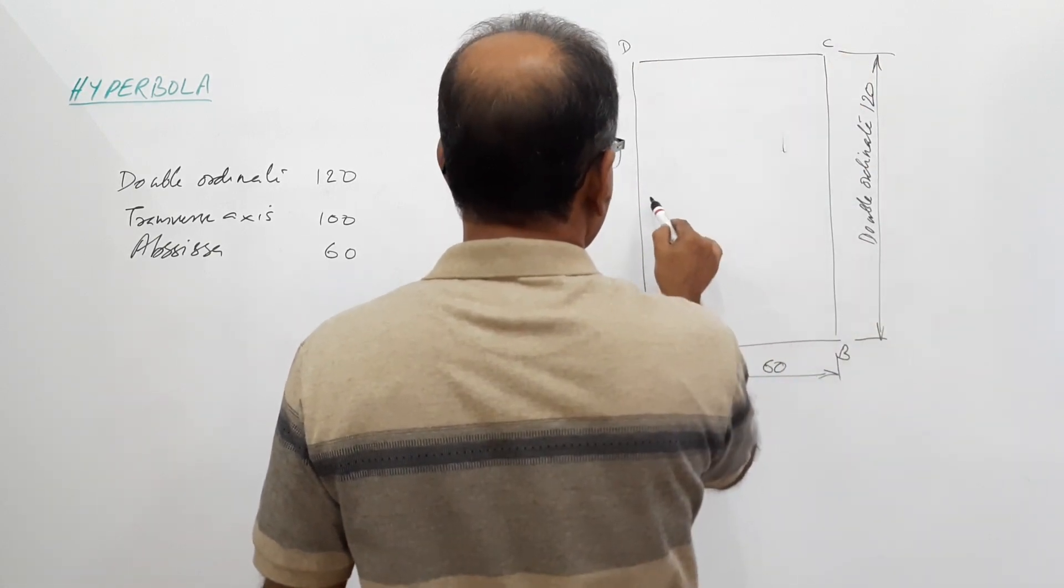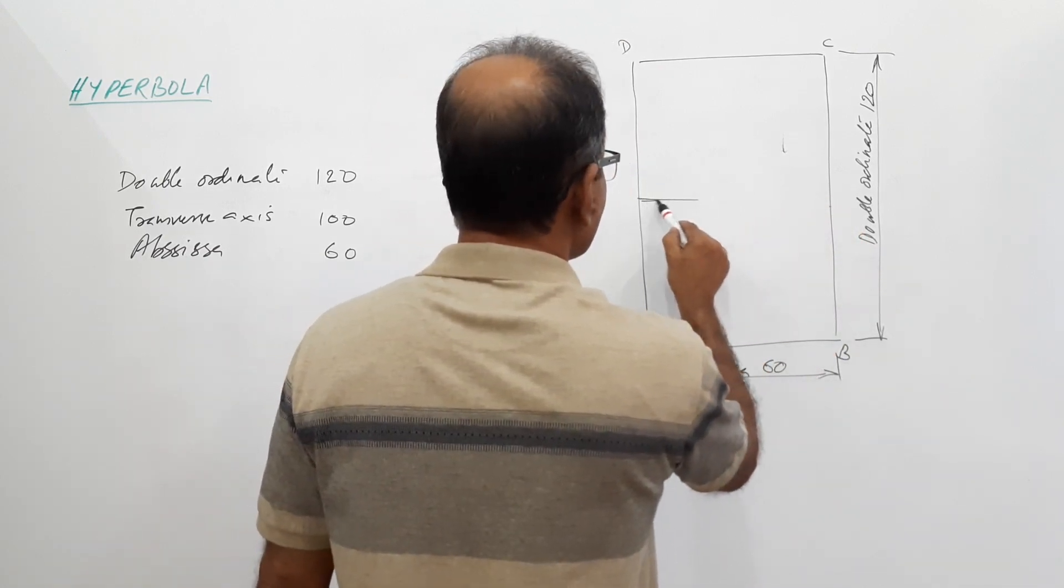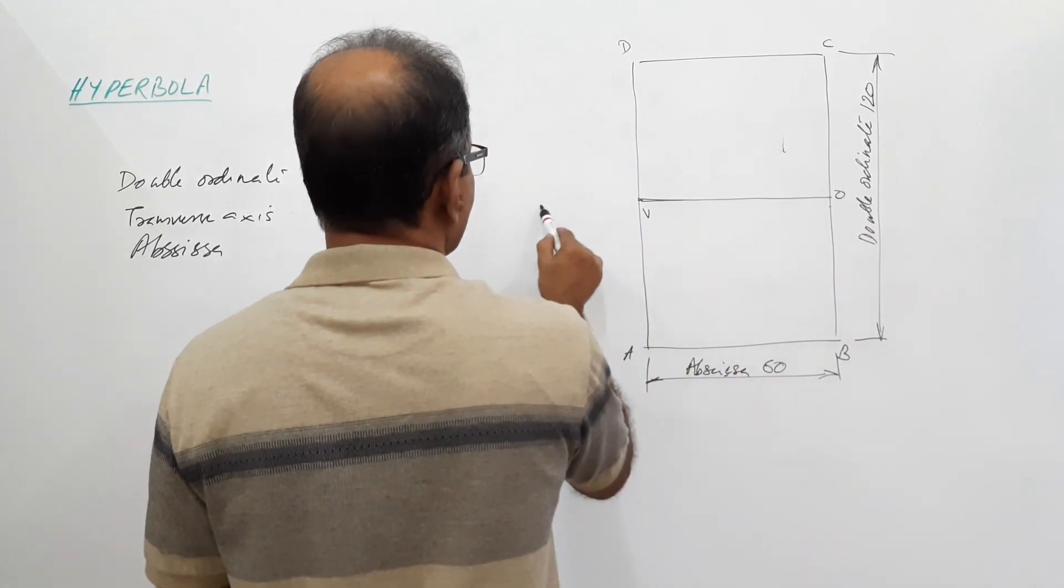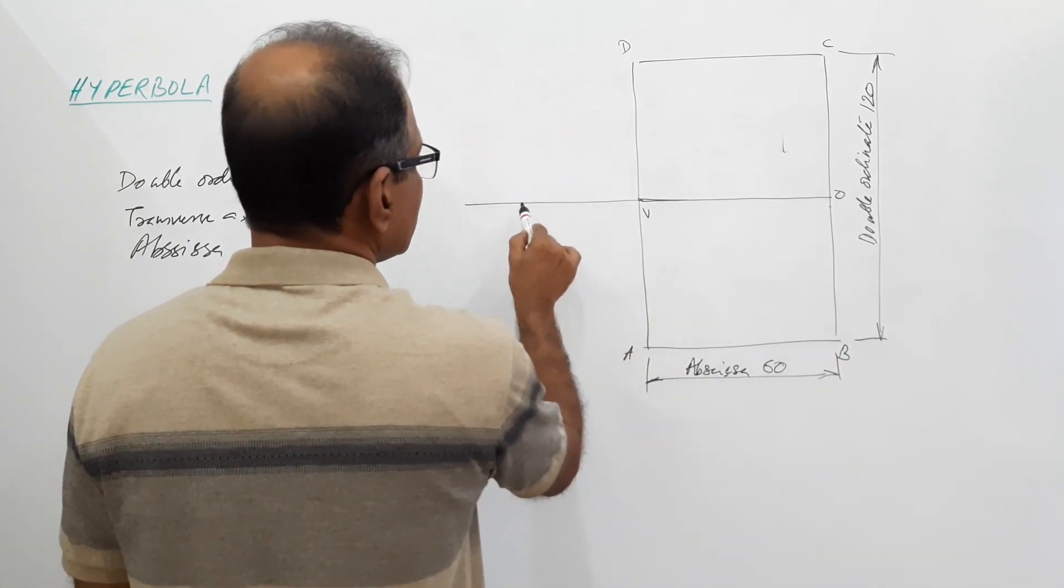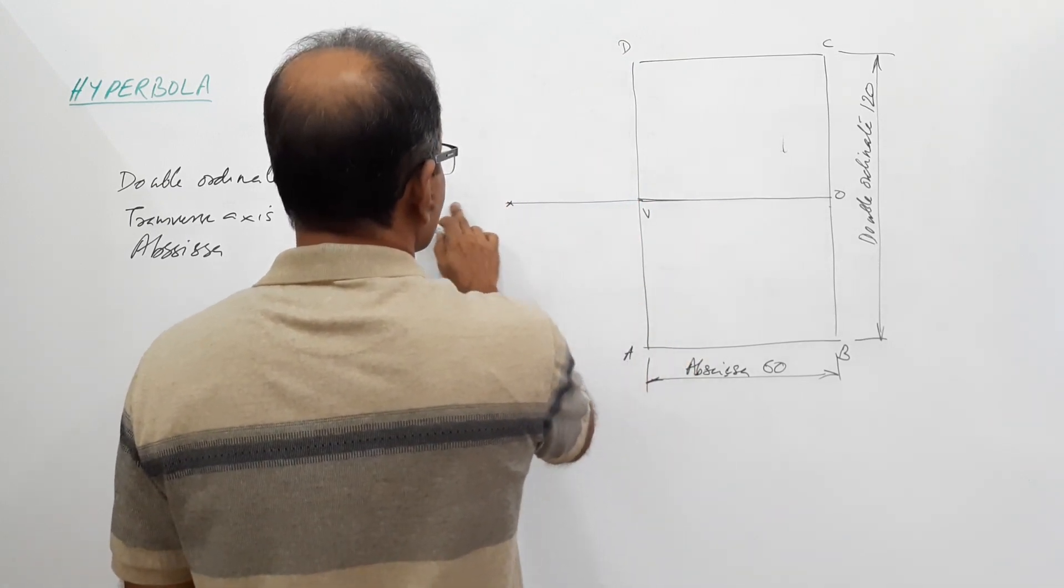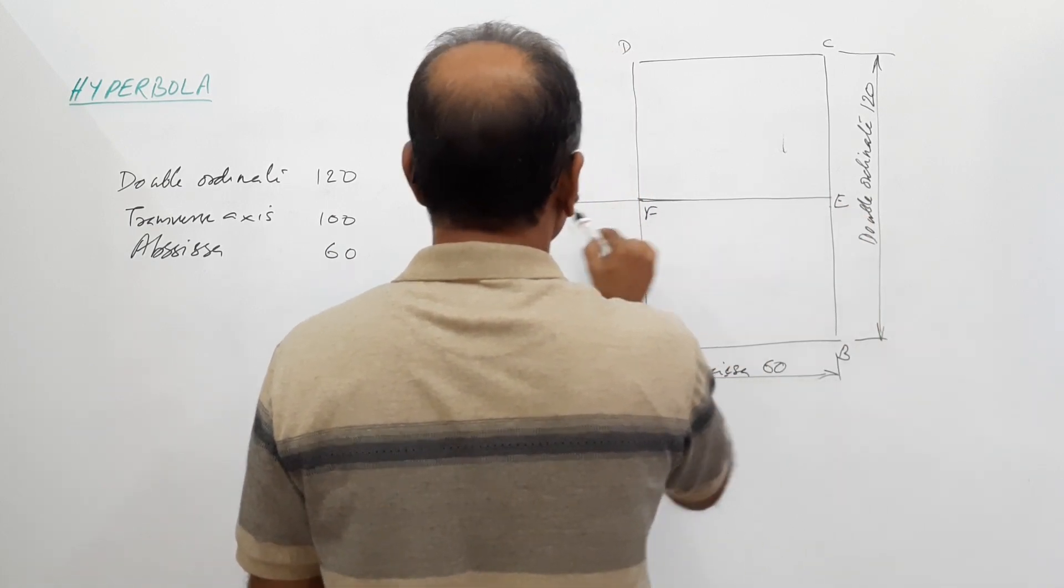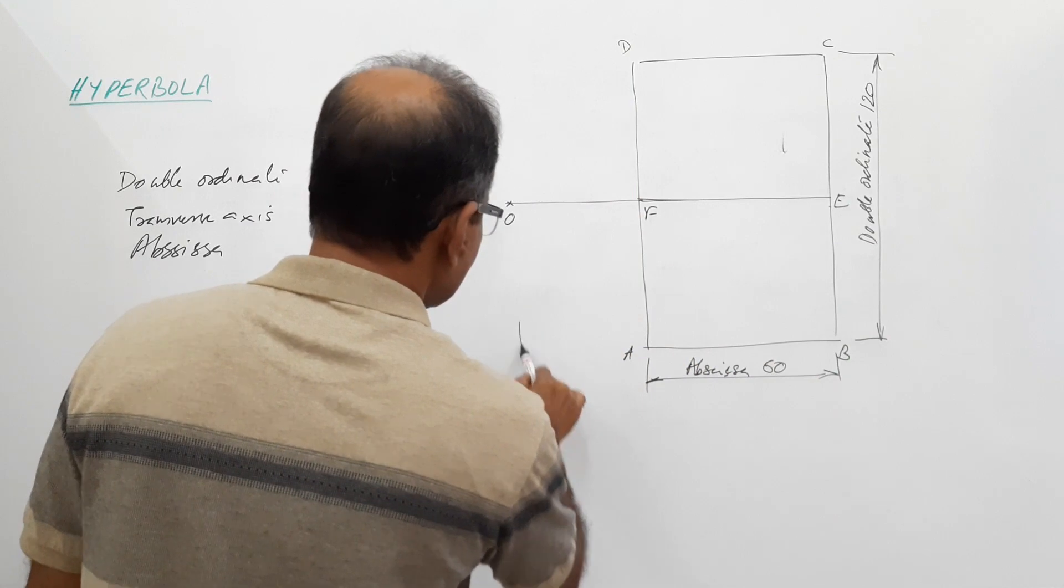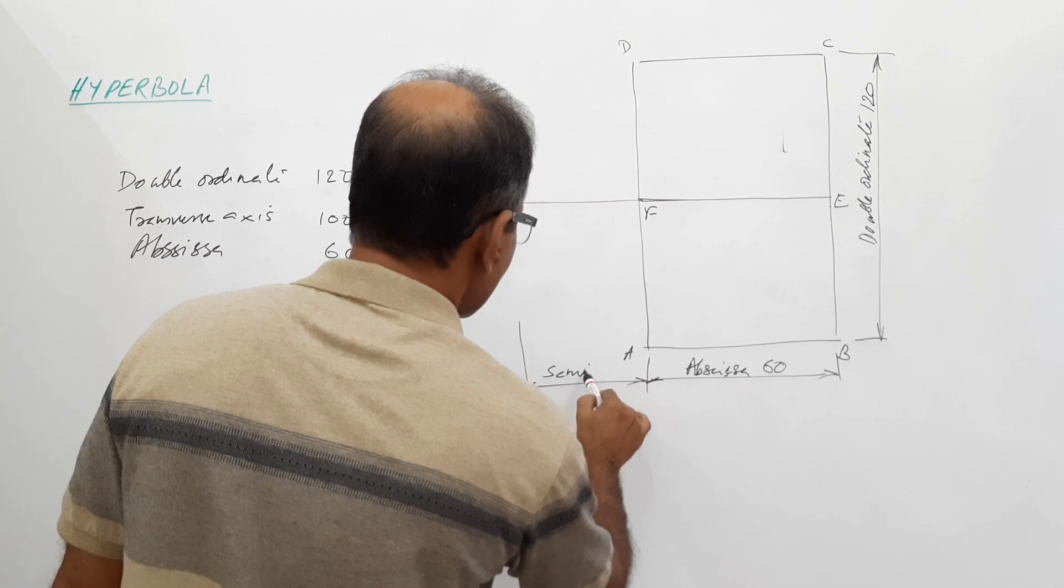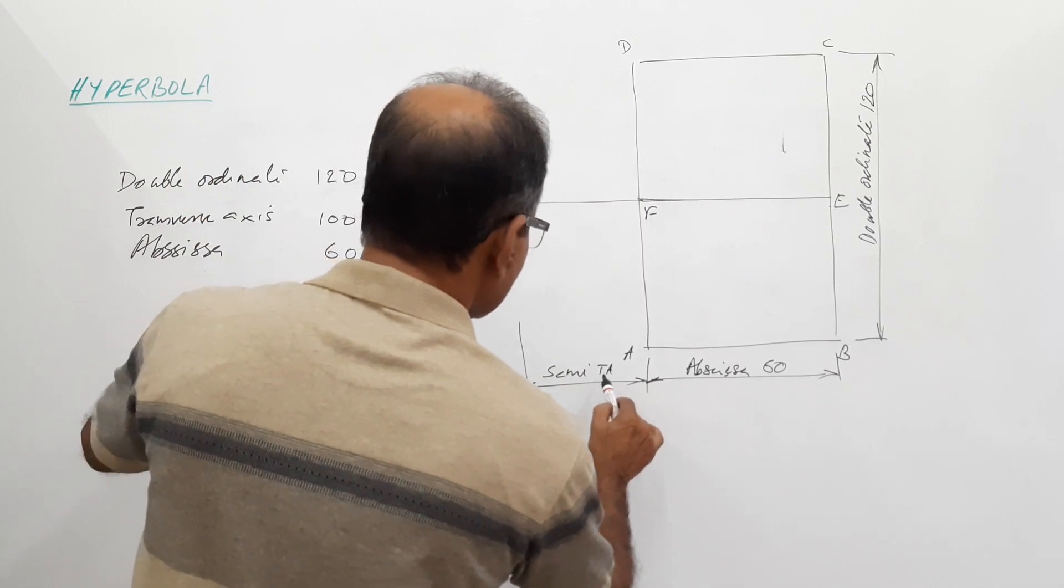I draw the center line. I change to A, B, C, D, E, F. I call this O. What is this? This is semi-transverse axis. How much is it? Transverse axis is 100, so this is 50. Semi-transverse axis is 50.